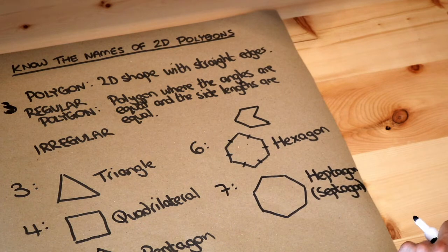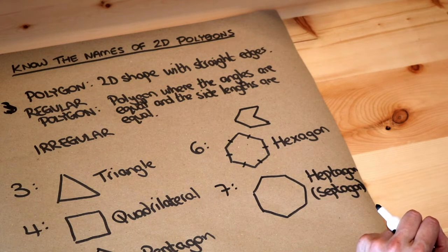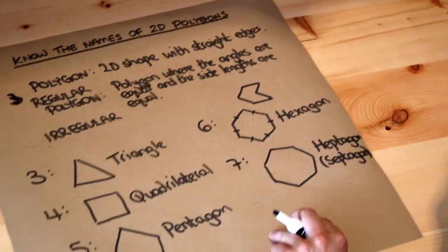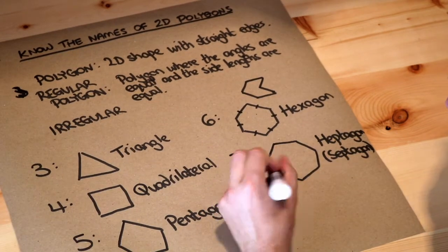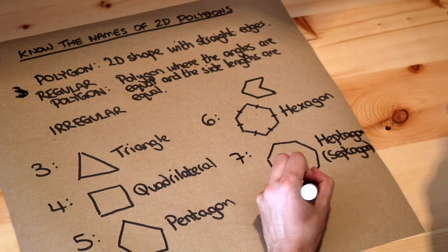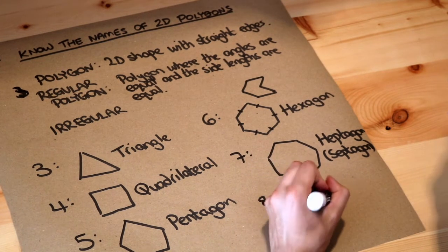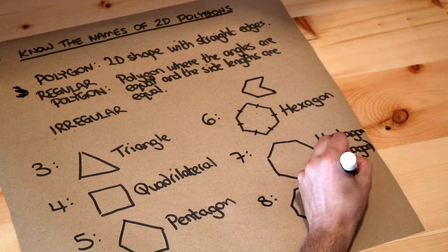Where else have we seen the word hept meaning seven? In heptathlon. And heptathlon is an athletics event with seven events in it. What about eight? Do you know anything with eight legs? Well an octopus. So you might be able to guess what the name is here. So that's known as an octagon.